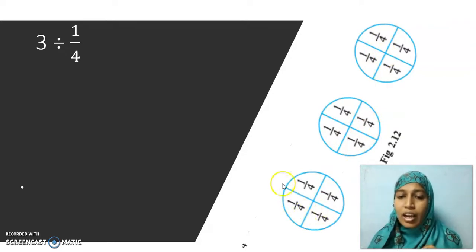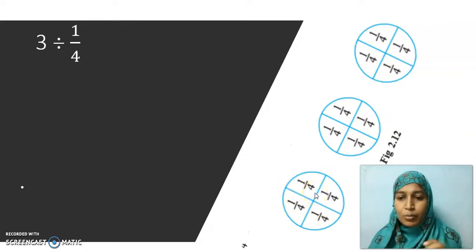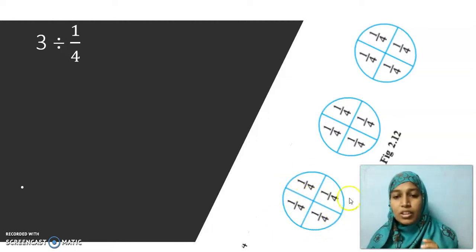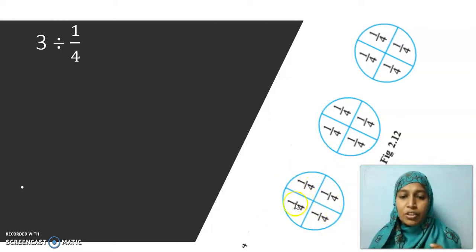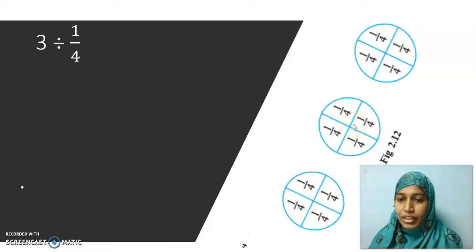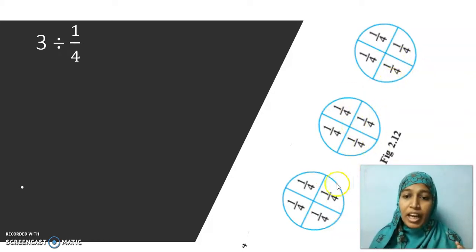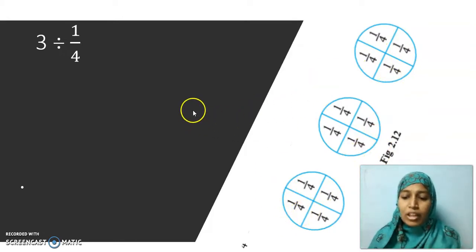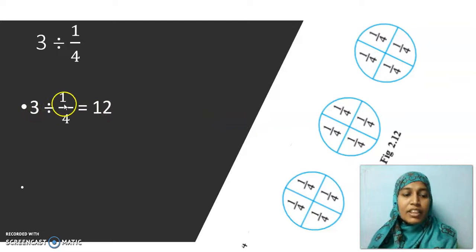These are 3 wholes — whole means W-H-O-L-E, not an empty space. This whole part is divided into quarter pieces. How many quarters do I have in this 1 whole? 4 quarters. Here another 4, and here another 4. Totally how many quarters do I have in these 3 wholes? I have 12 quarters. So I can say 3 divided by 1 by 4 is equal to 12.